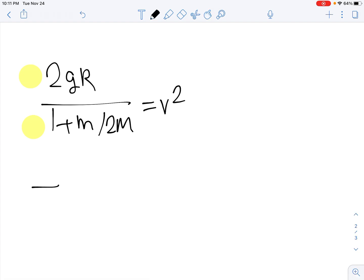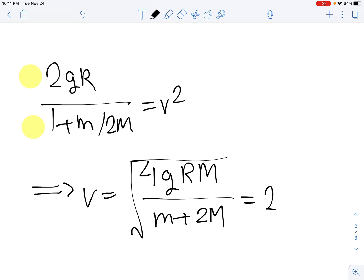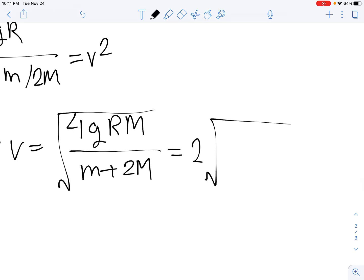Here, if we multiply both sides by 2M over m on the numerator and the denominator, that will give us that v equals the square root of 4gRM over m plus 2M. This is the same thing as 2 times the square root of gRM over m plus 2M.